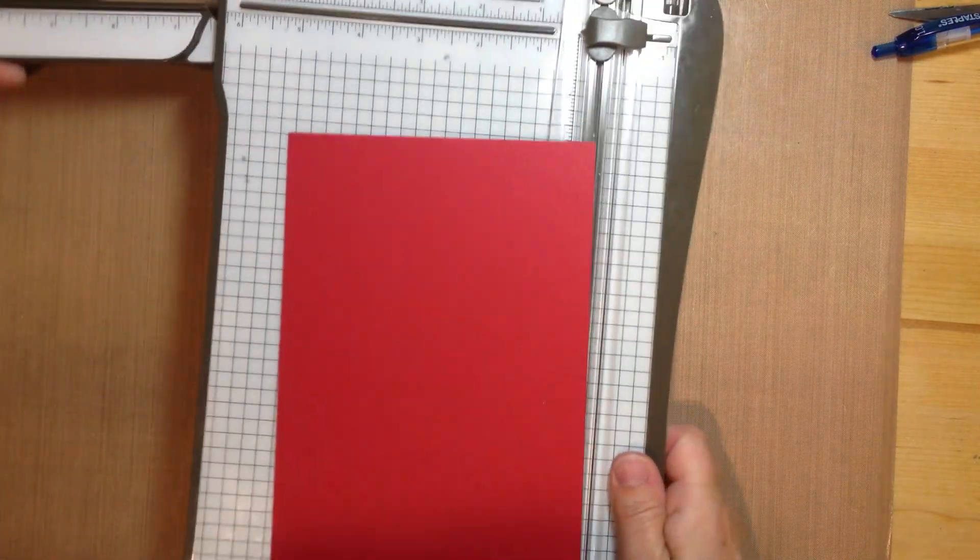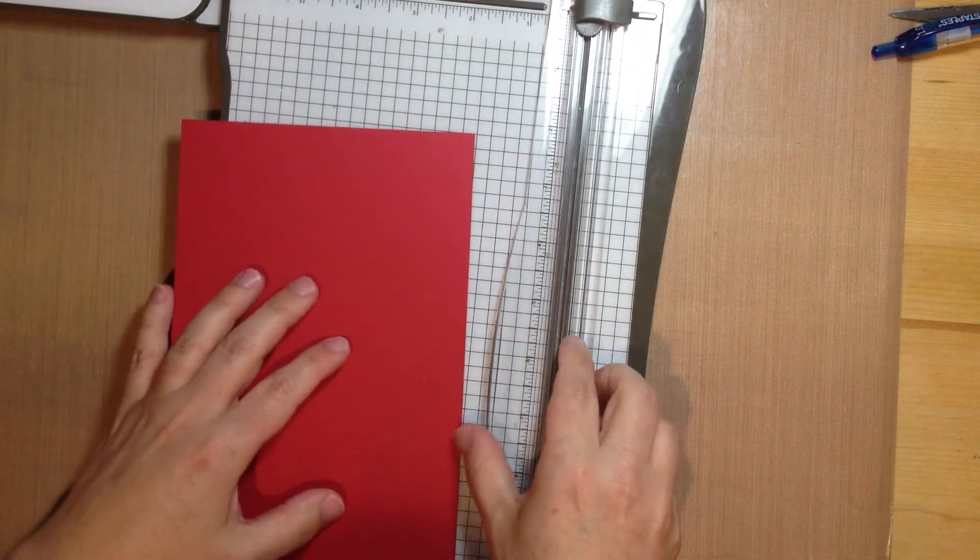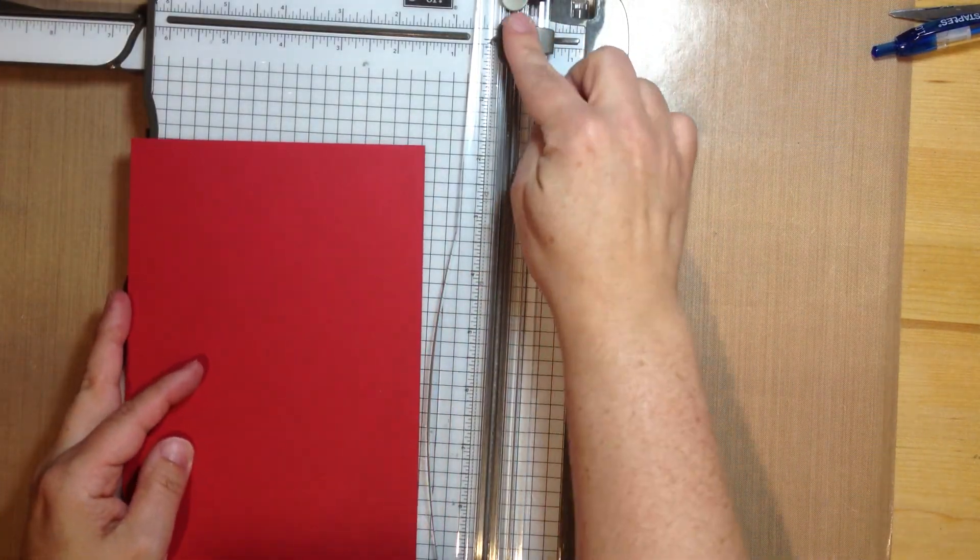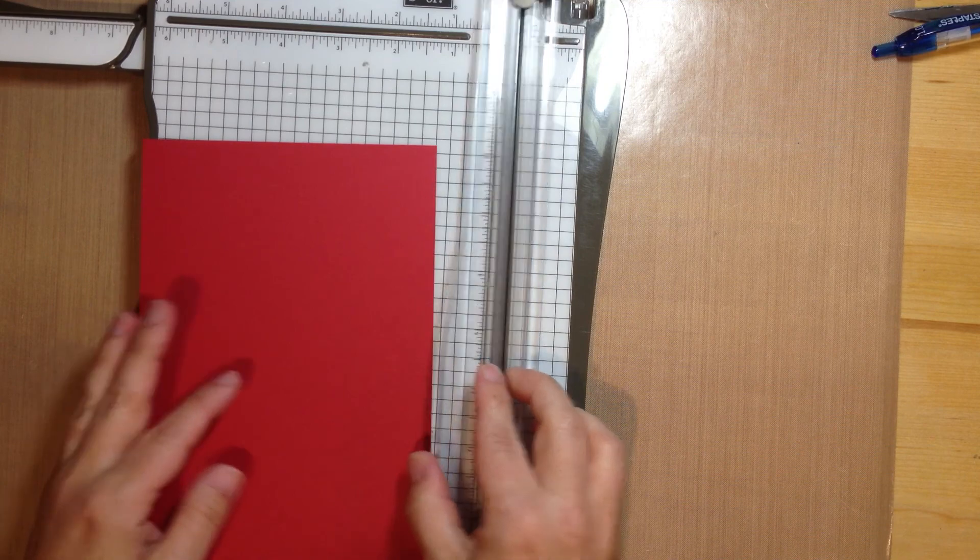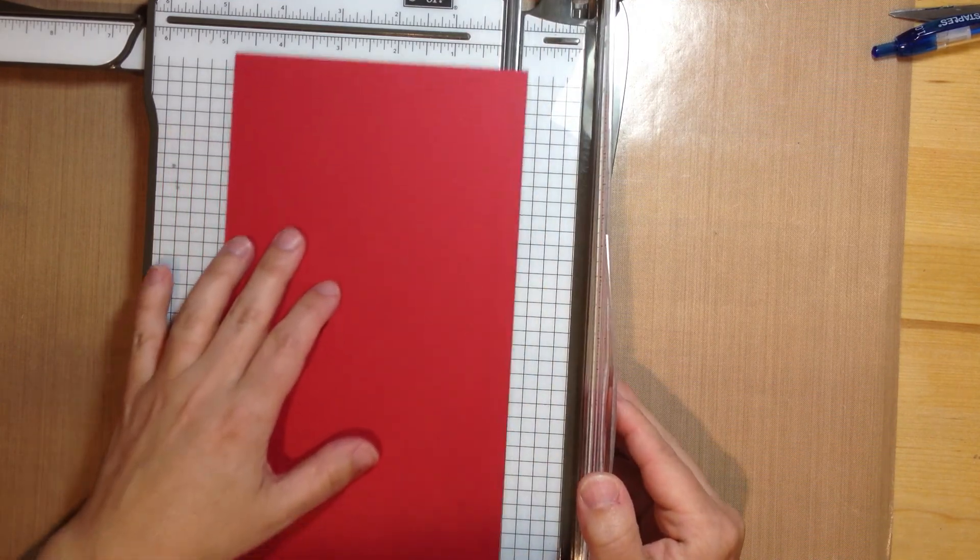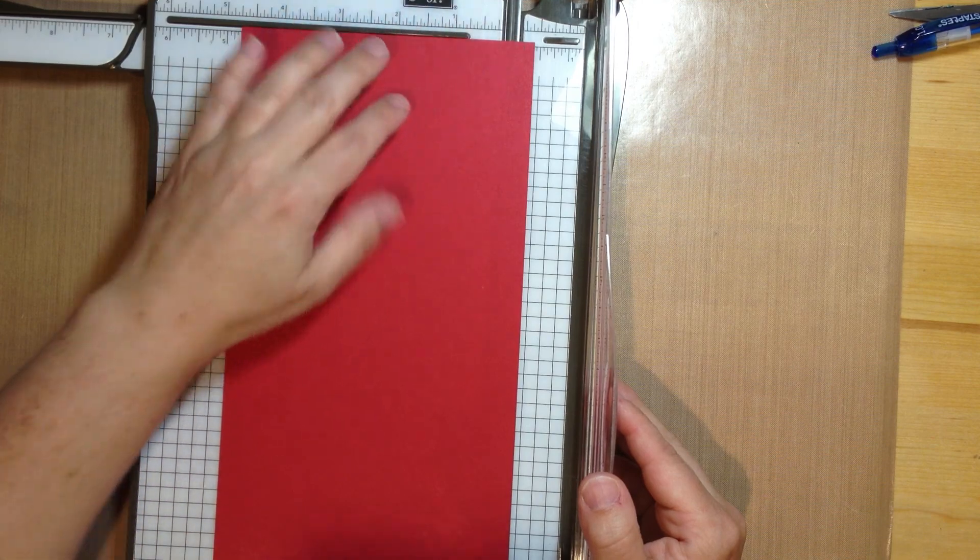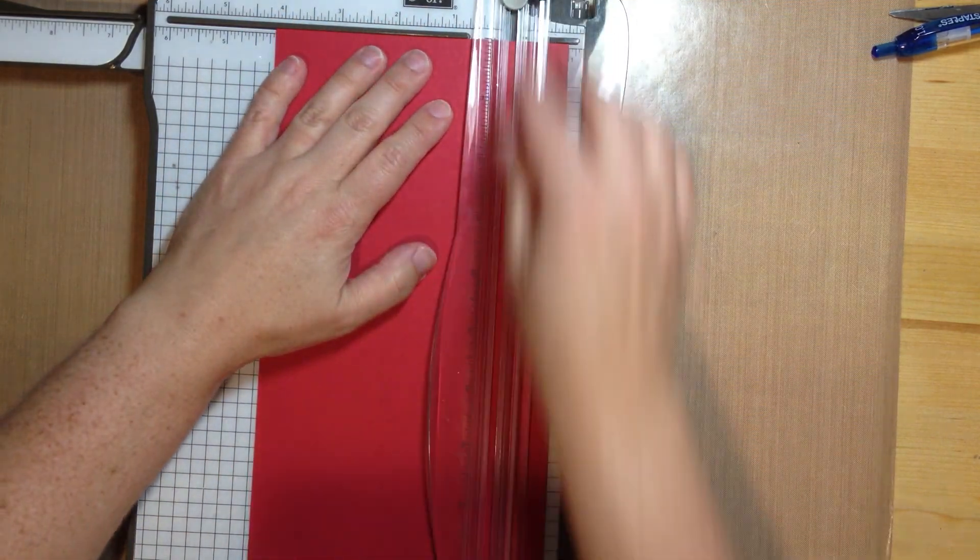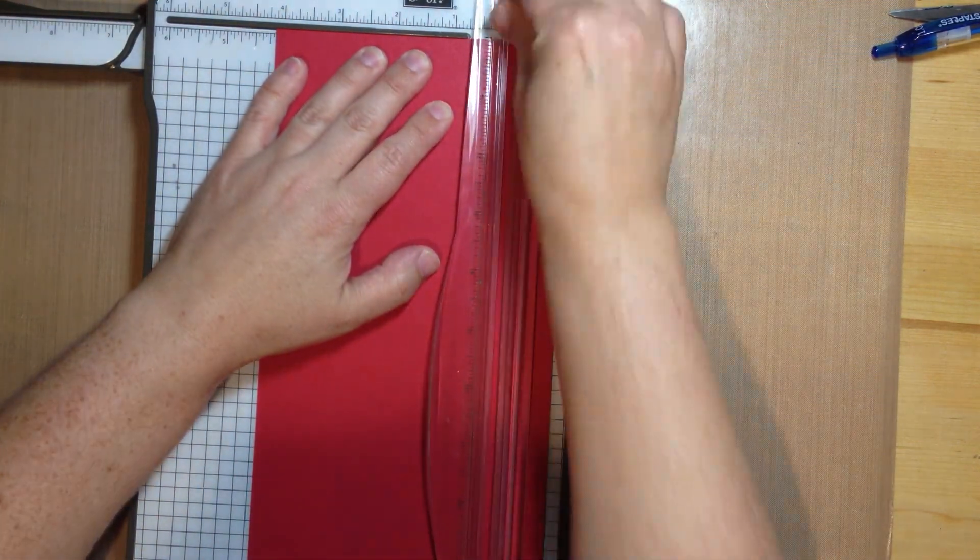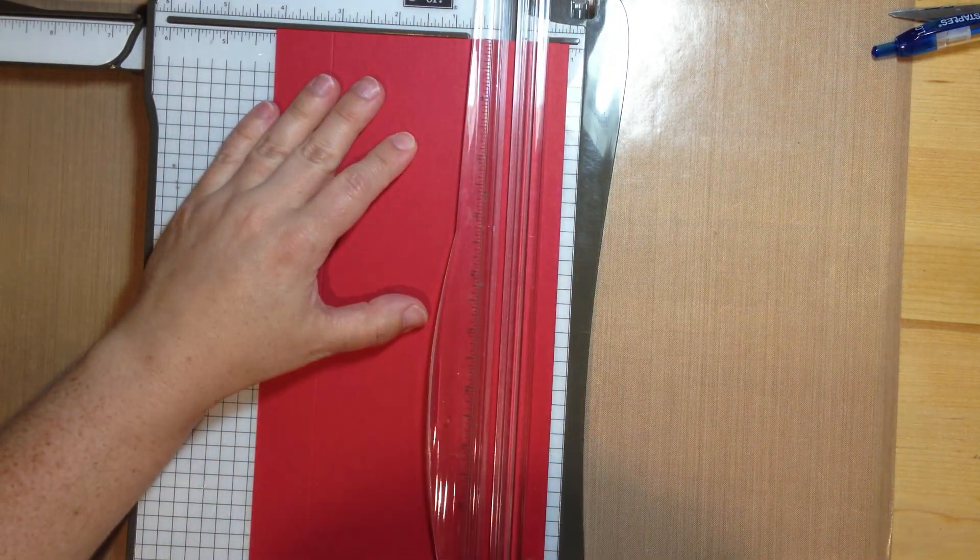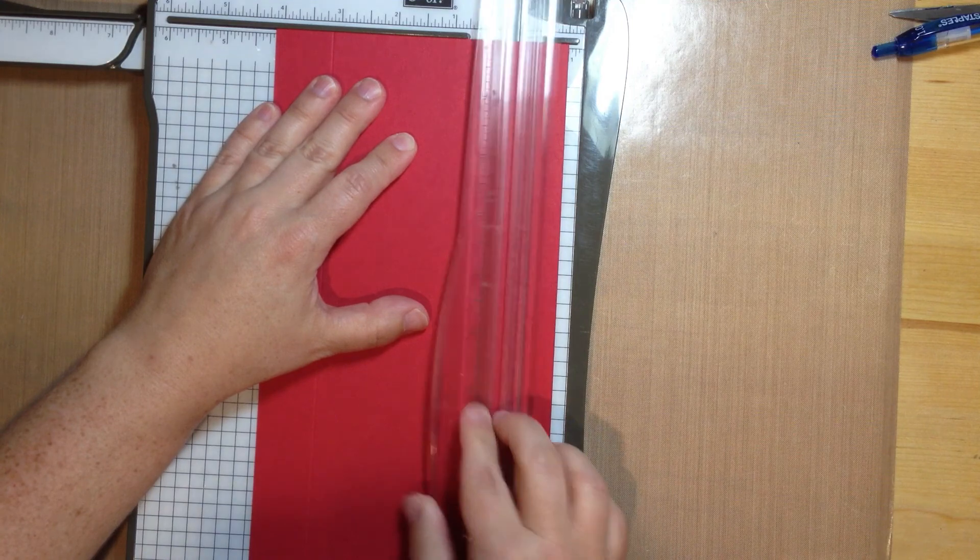And I am going to open this up. And we are going to do some scoring. So if you have got this paper cutter, you know that the dark grey one cuts. So I am going to slide that out of the way. And what I am going to do is along the short side, I am going to measure 1 inch and I am going to score all the way down. And then I am going to flip it around and measure 1 inch from the other side and score it.